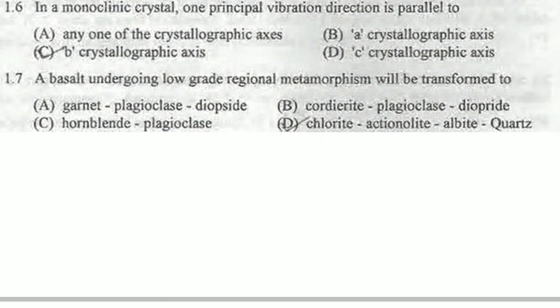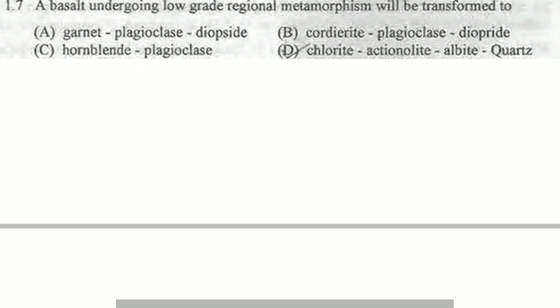Next question: a basaltic rock undergoing low-grade regional metamorphism will transform to which mineral assemblage? In low-grade metamorphism, the mineral assemblage will include chlorite, actinolite, and albite. Do not confuse with other assemblages. The correct answer is option D.